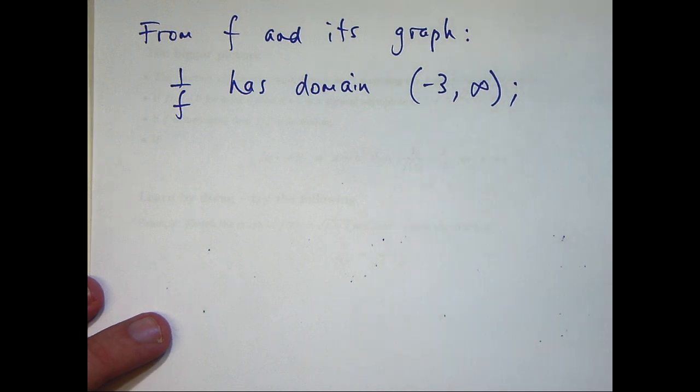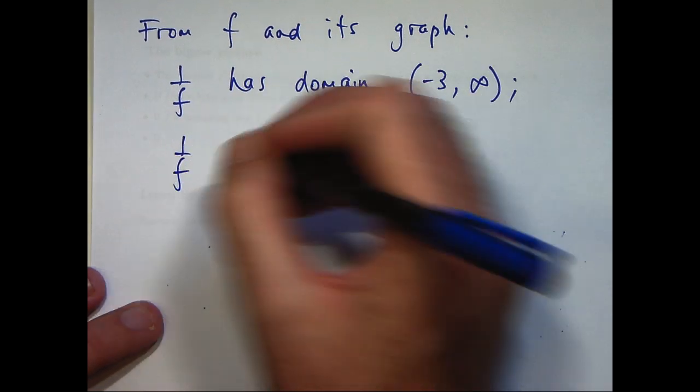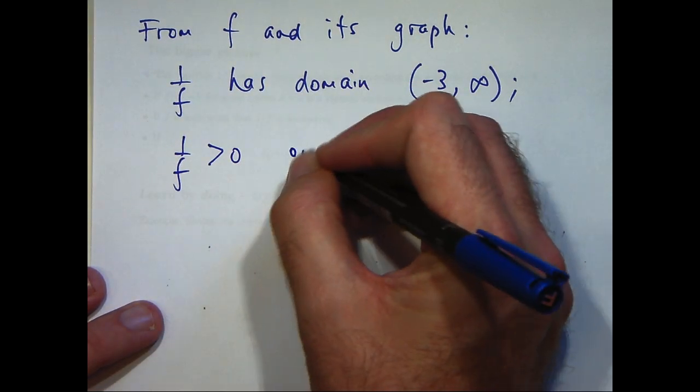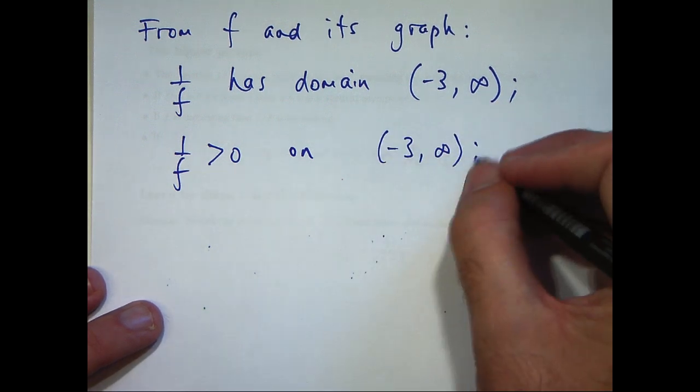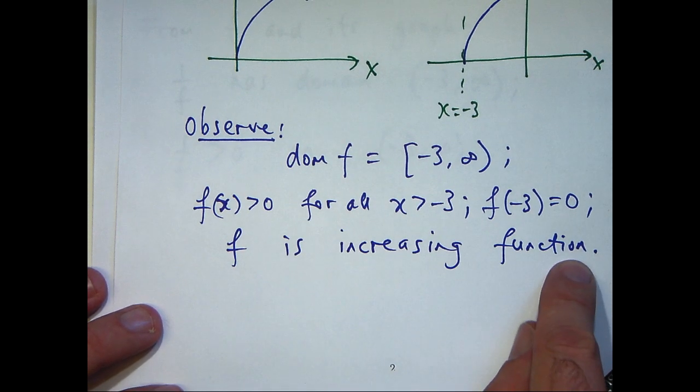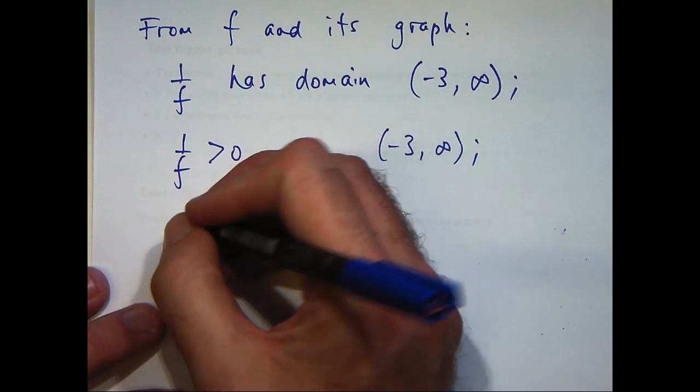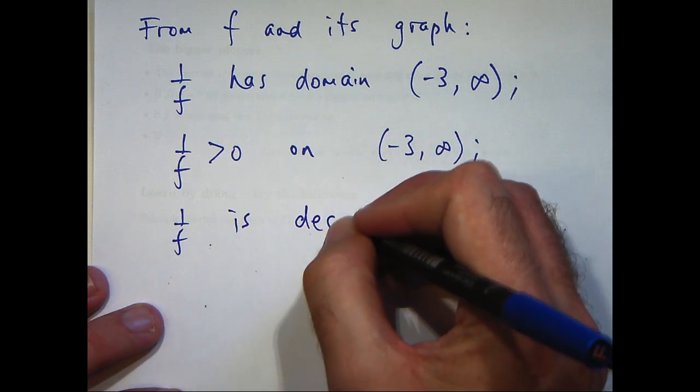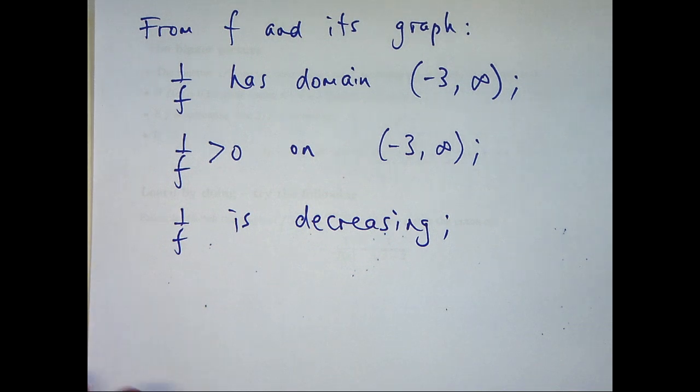Okay, what else do we want to put down about our reciprocal function? Well, f of x is positive, so 1 on f will also be positive because we're dividing positive by positive. We also noted that f was strictly increasing, so 1 on f must be strictly decreasing.